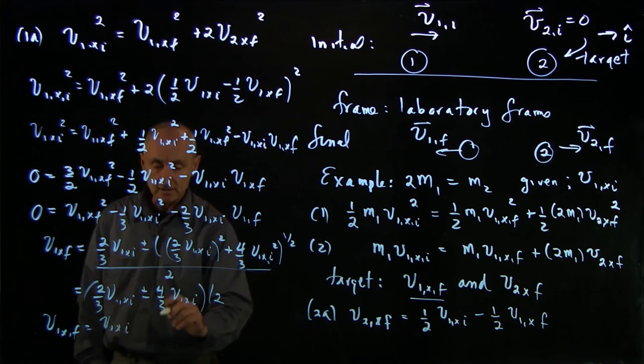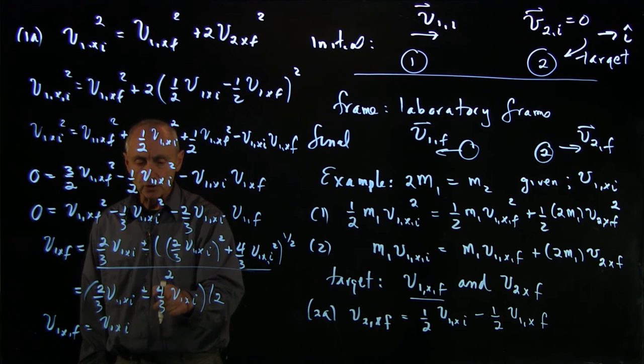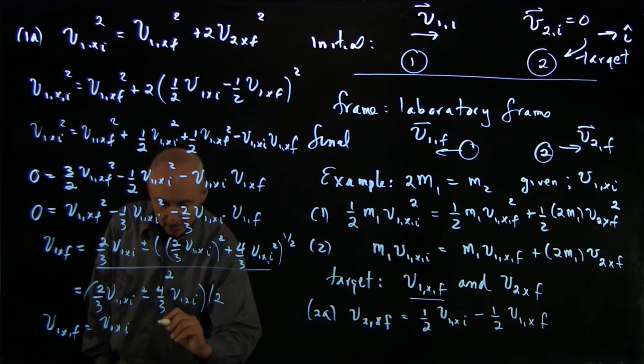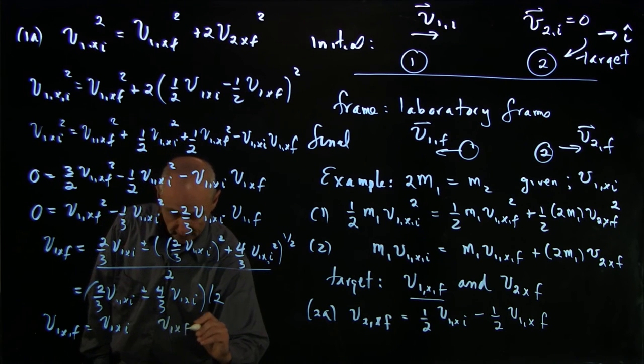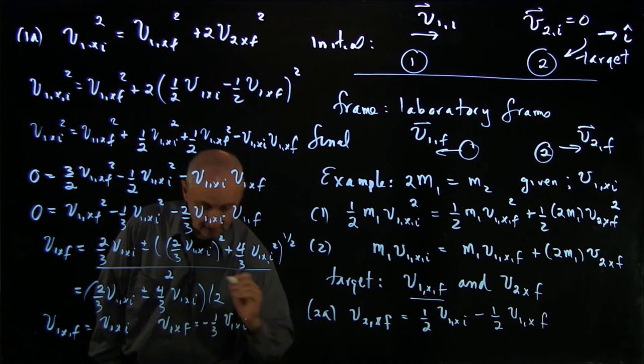And when you subtract them, you're getting 2/3 minus 4/3. That's negative 2/3 divided by 2. So that is another solution, v1x final equals negative 1/3 v1x initial.